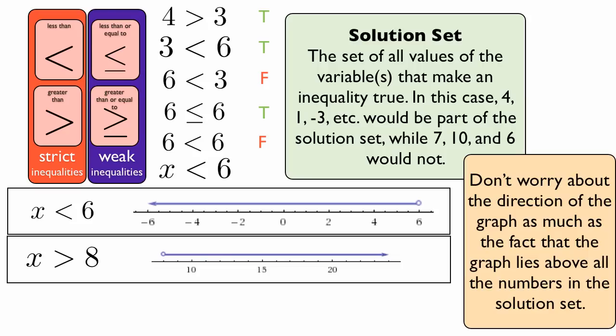Another example is x is greater than eight. What numbers are greater than eight? Nine is greater than eight, ten is greater than eight, fifteen is greater than eight. So the line extends from eight into all the points greater than eight. Notice that there's a hollow circle in these examples above the six and the eight. That means the answer cannot be a six. The line goes above every point less than the six and greater than the eight, but it doesn't include those numbers themselves. That's because these are strict inequalities.